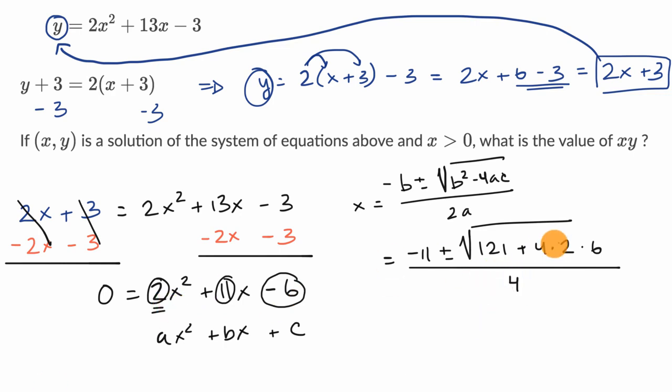And now what do we have in here? Four times two times six is equal to 48. So this is equal to 48. And so 121 plus 48 is 169. Everything under the radical is 169, which is convenient because that is 13 squared. And so this is going to simplify. It's equal to negative 11 plus or minus square root of 169, which is 13 over four.